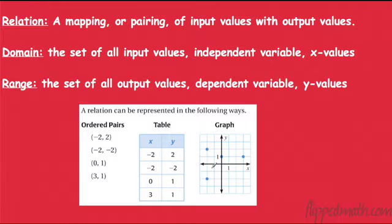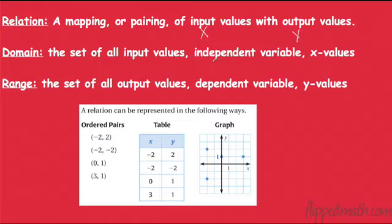A relation. A relation is just a mapping or pairing of input values with output values. We think of input values as our x's and output values as our y's. When we put something in, we get something out. That's a relation.